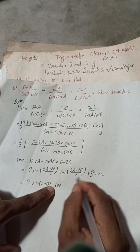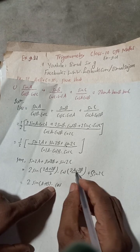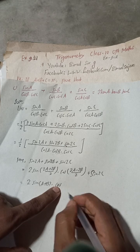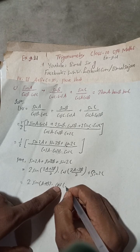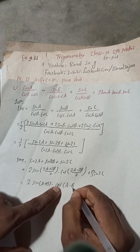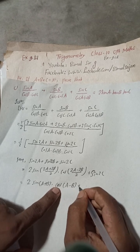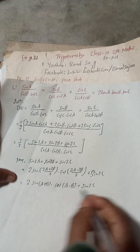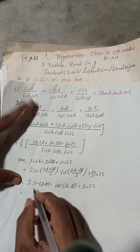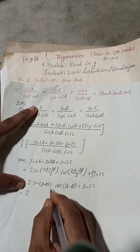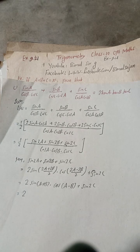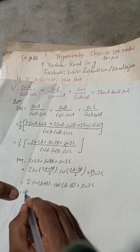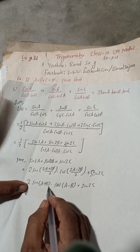When we take two common from the cos term, it becomes 2(A−B), and that two cancels, leaving cos(A−B). Similarly for the sin part, we get sin(A+B). So the expression becomes 2 sin(A+B) cos(A−B) plus sin 2C as it is.